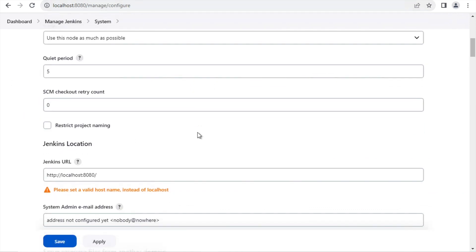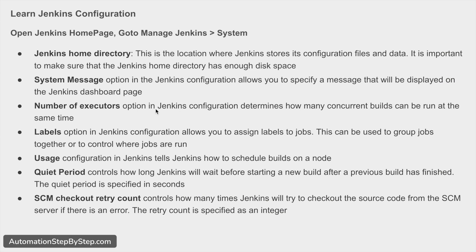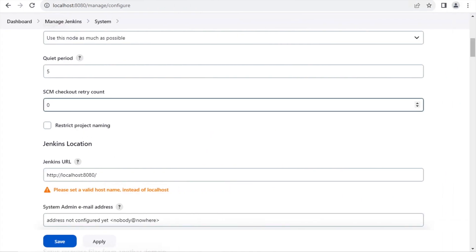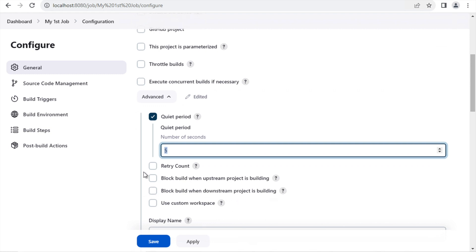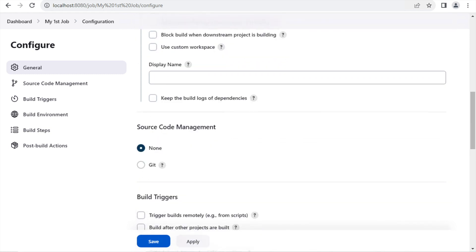The next setting is SCM checkout retry count. This controls how many times Jenkins will try to check out the source code from the source code management repository or server if there is any error. When we run a job, we often check out a code base from a repository like GitHub, and if that checkout is not successful, we can assign how many times Jenkins should retry. This setting is also present at the job level and can be overwritten there.